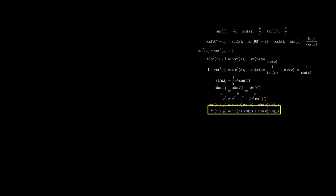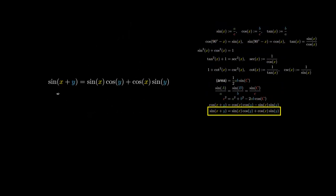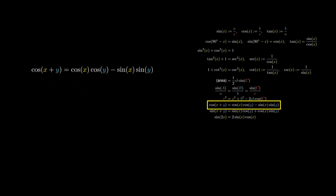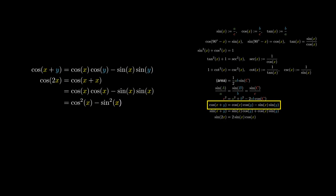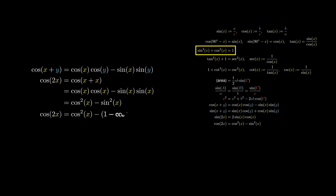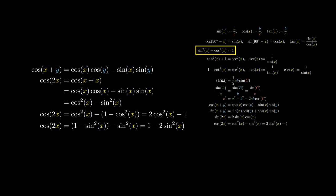In the special case that Y equals X, we obtain the double angle formulae. For sine, this simplifies to 2 sine X cosine X. For the cosine case, we obtain cosine 2X equaling cosine squared X minus sine squared X. Applying the Pythagorean identity, we can replace sine squared X with 1 minus cosine squared X, simplifying to 2 cosine squared X minus 1. If instead we replace cosine squared X with 1 minus sine squared X, we obtain 1 minus 2 sine squared X.